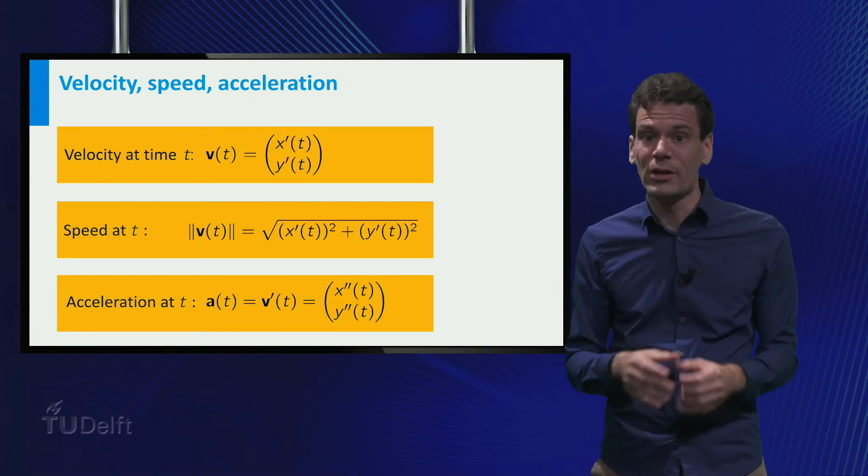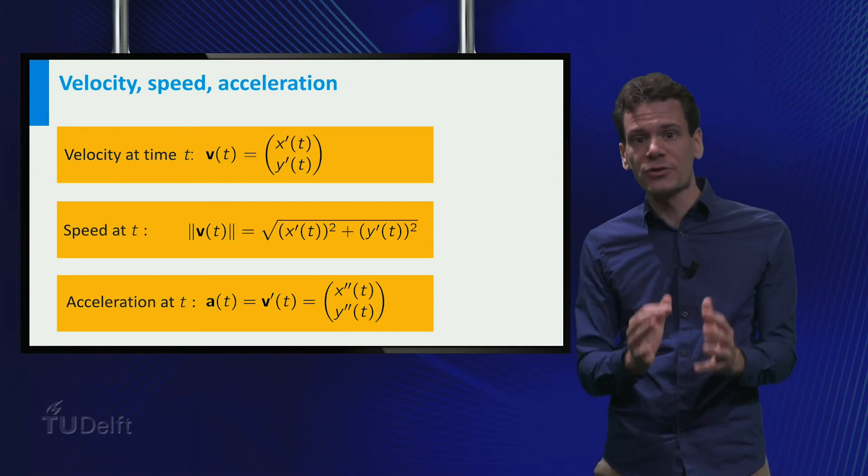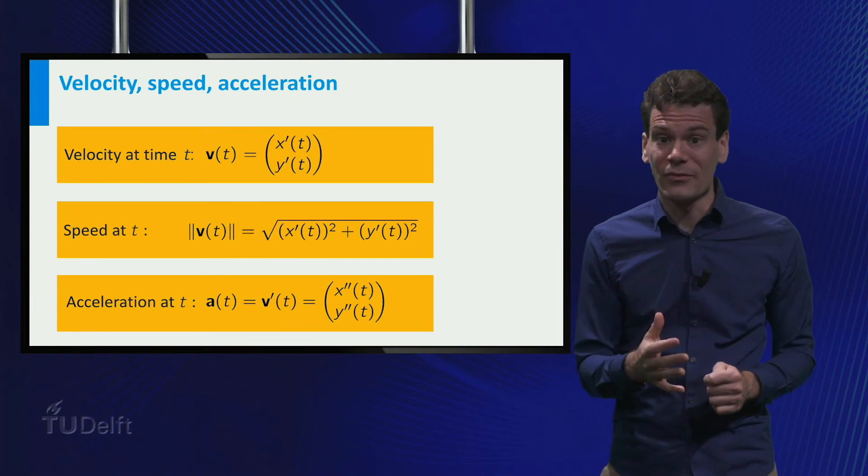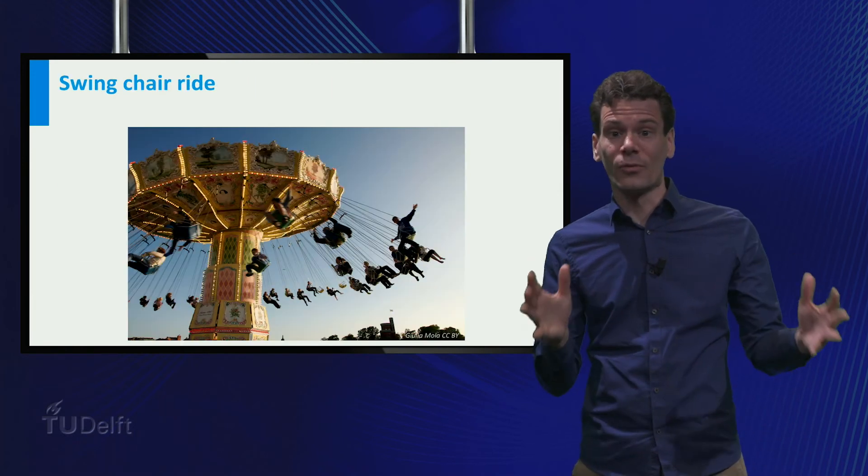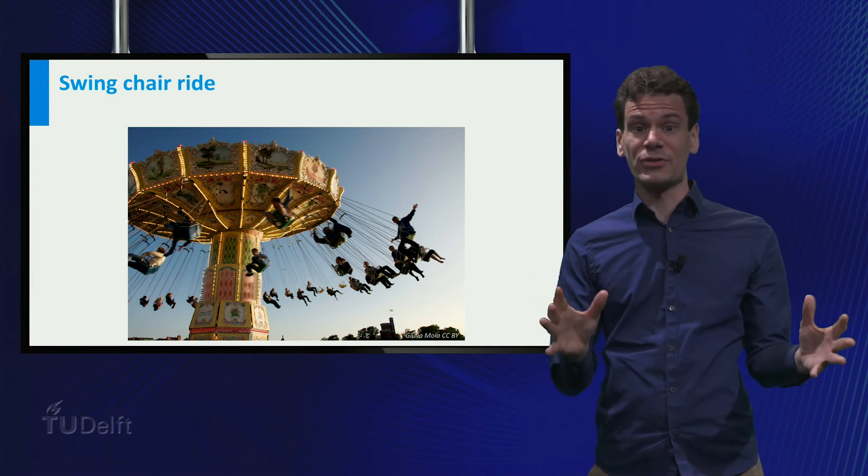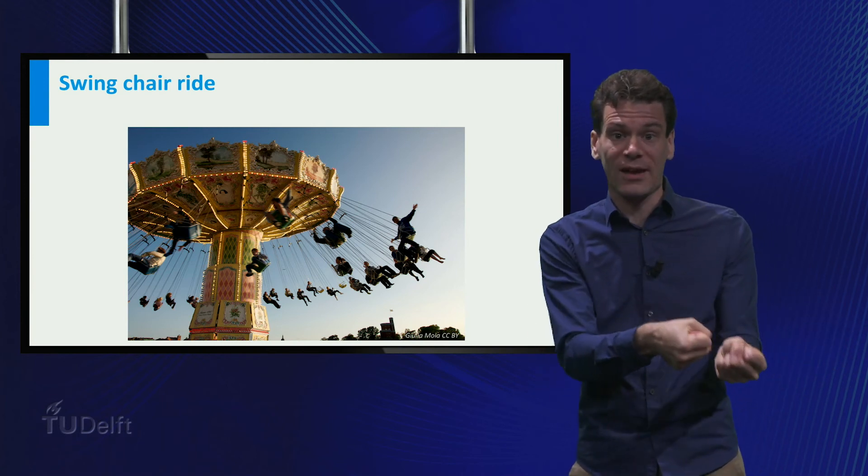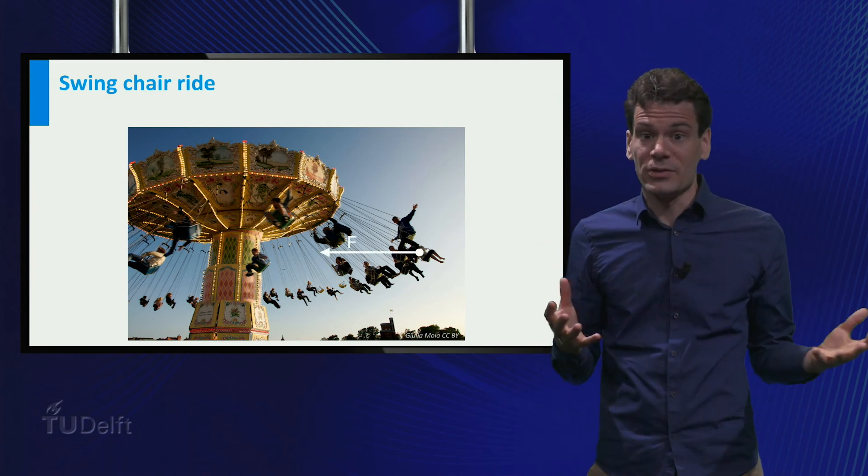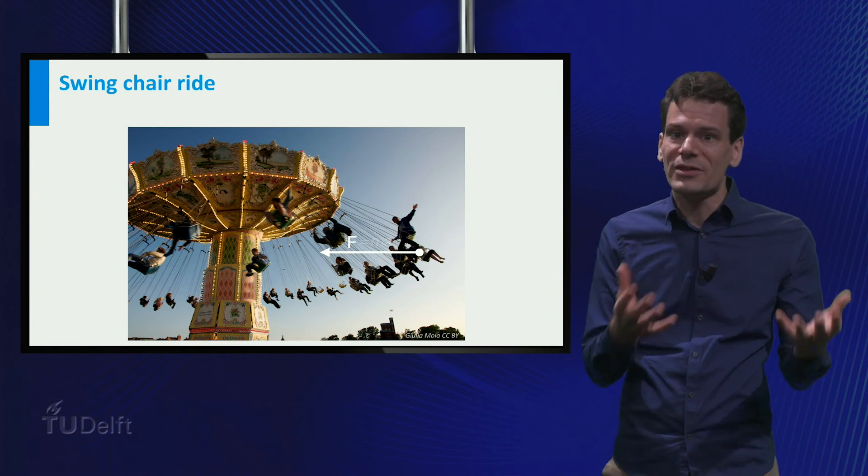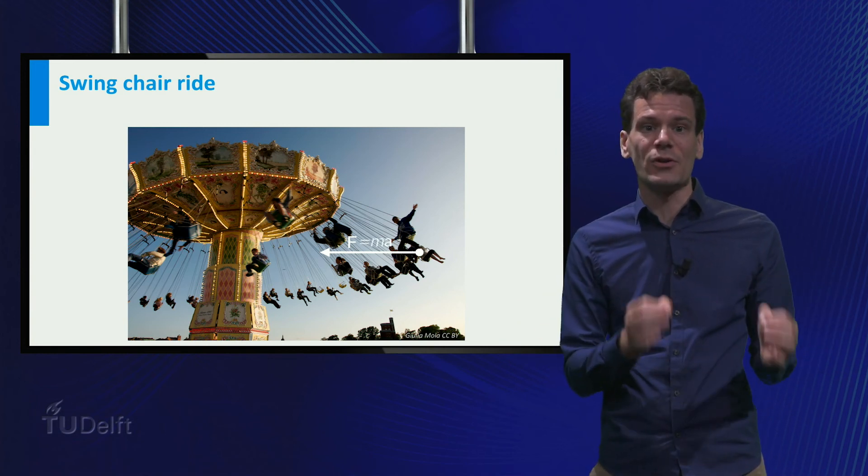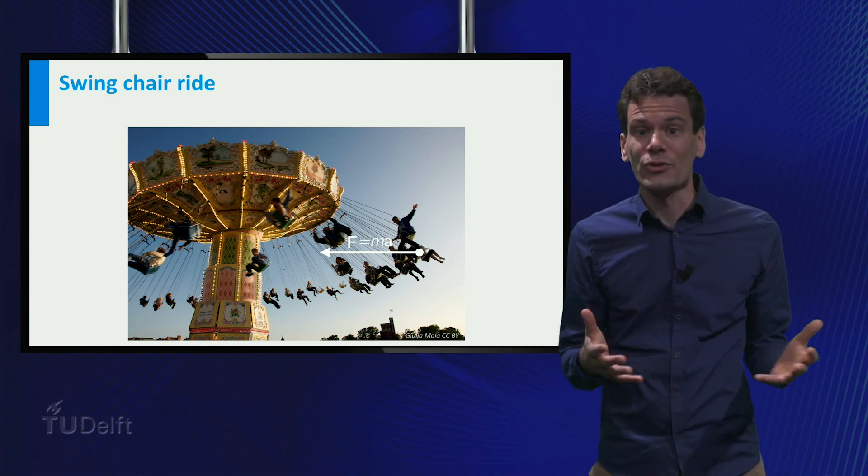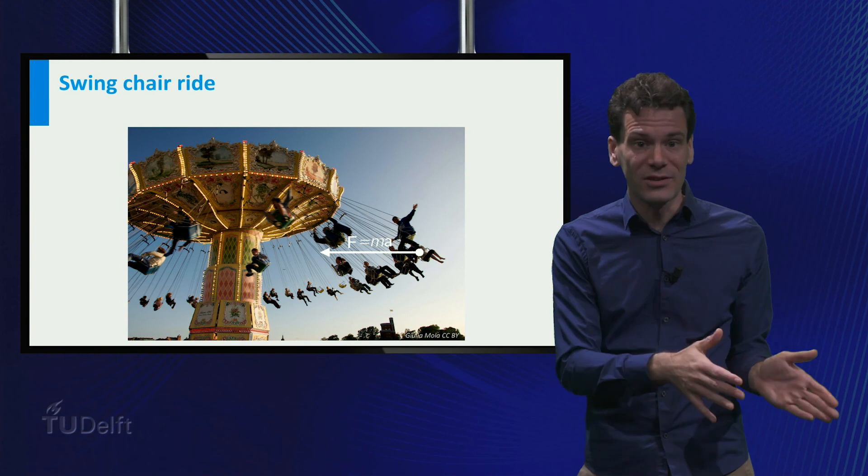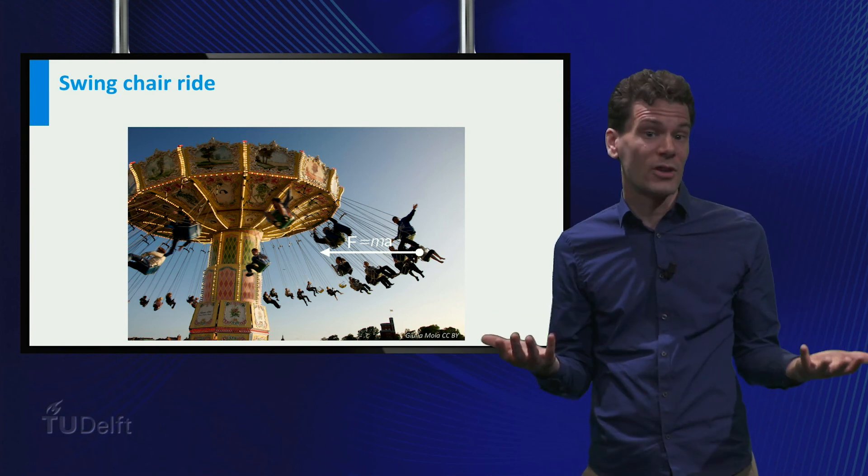Actually, it is possible that an object moves at constant speed, but has non-zero acceleration. A very nice example of this is a swing chair ride. During the ride, the chairs have constant speed. However, the ropes pull the chairs inward. There is an effective horizontal force on the chairs. By Newton's second law, this means that the chairs are accelerating, even though the speed is constant. And of course, what happens here is that the velocity is changing. It changes direction. So, the acceleration is non-zero.